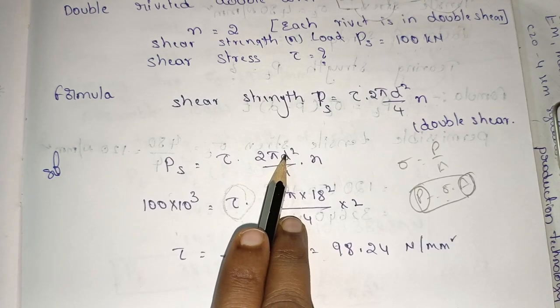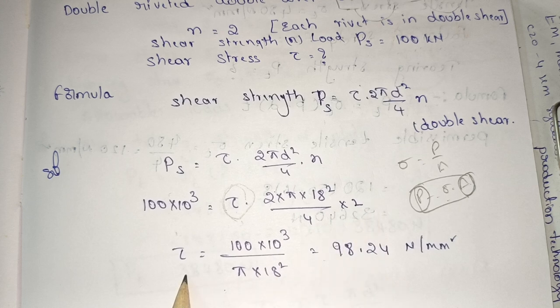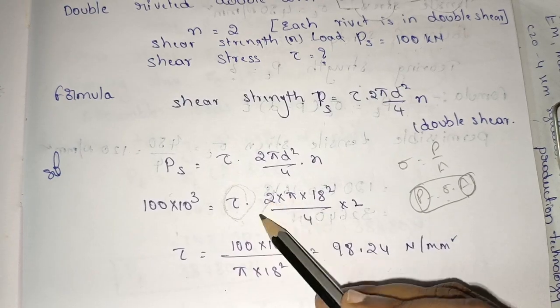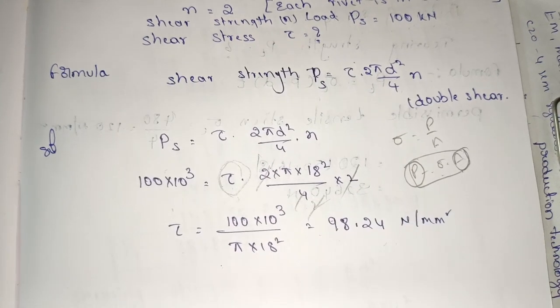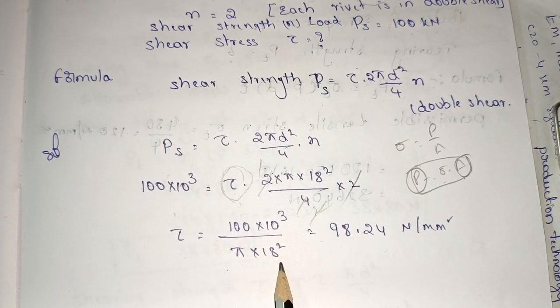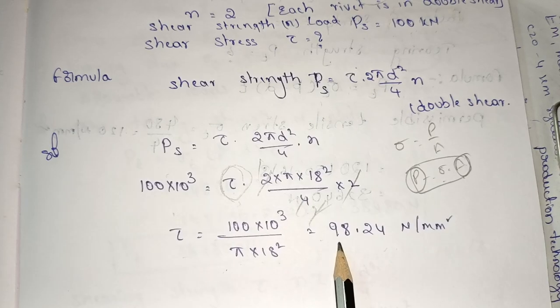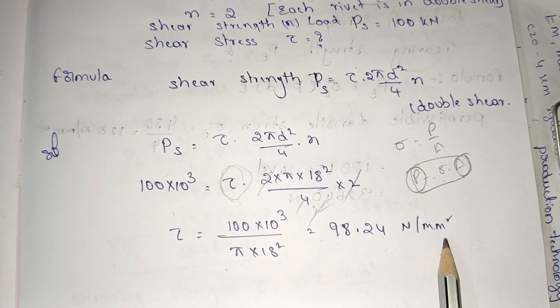We have tau calculation: 2 into pi d, we have 18, 18 squared divided by 4 into 2. Calculate the stress, we have 98.24. We simplify: the 2 cancels. So tau equals 100 into 10 cube divided by pi into 18 squared. Therefore tau equals 98.24. The units are Newton per mm squared.